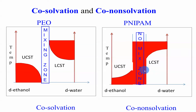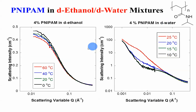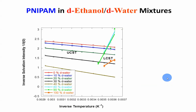Co-non-solvation of NIPAM in deuterated water-ethanol mixtures. In ethanol, when you heat up the intensity goes down — that's UCST. In water, when you heat up the intensity goes up — that's LCST. When we plot the inverse intensity versus inverse temperature in Kelvin, we see the UCST lines and LCST lines, which help us determine the spinodal lines through extrapolation. We see that when there is little water or a lot of water, the system is fine. In between, there are no lines — there is no spinodal, the polymer is completely demixed.